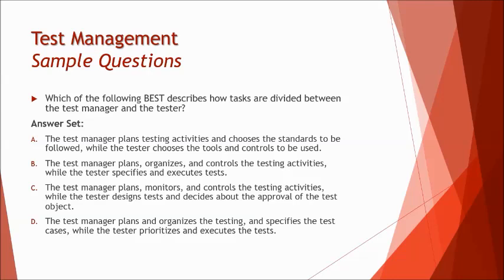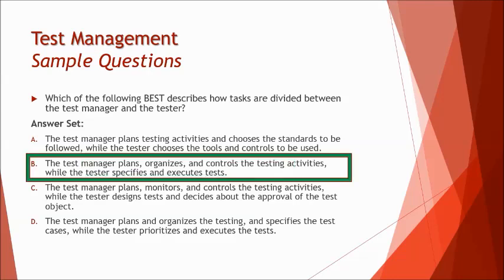Option C says the test manager plans, monitors and controls the testing activities while the tester designs tests and decides about the approval of the test objects. Remember, testers do not have any rights of approving, deciding, determining, selecting or identifying anything — so C is wrong. Option D says the test manager plans, organizes and specifies the test cases — the test manager does not specify test cases — while the tester prioritizes and executes them. So the right answer is B.